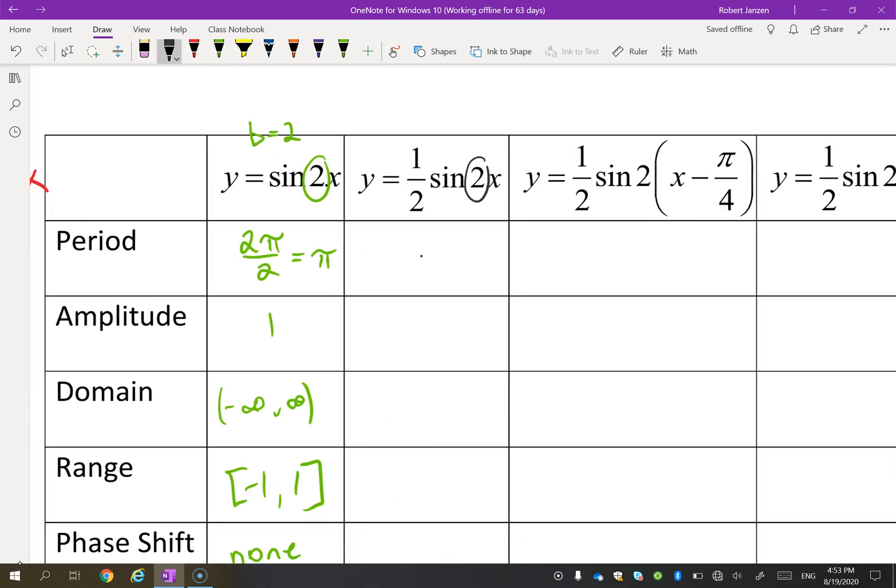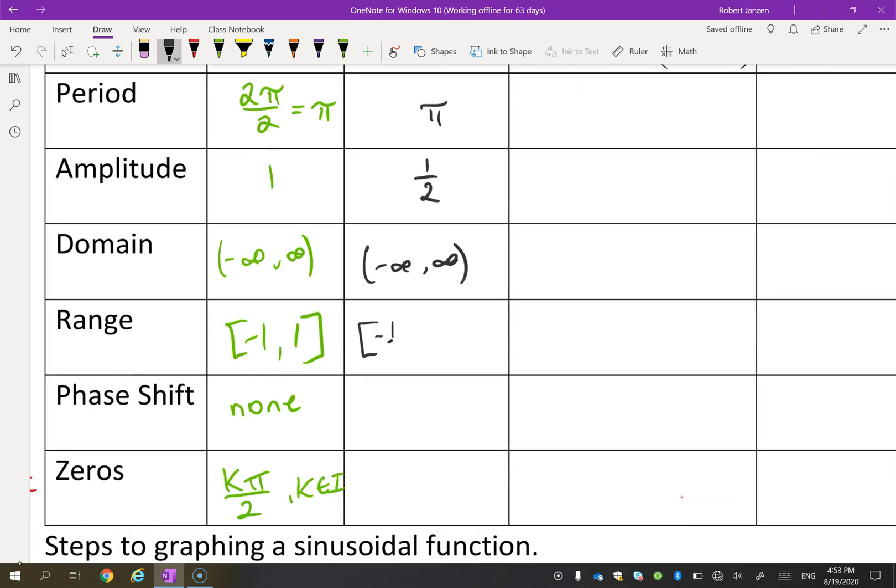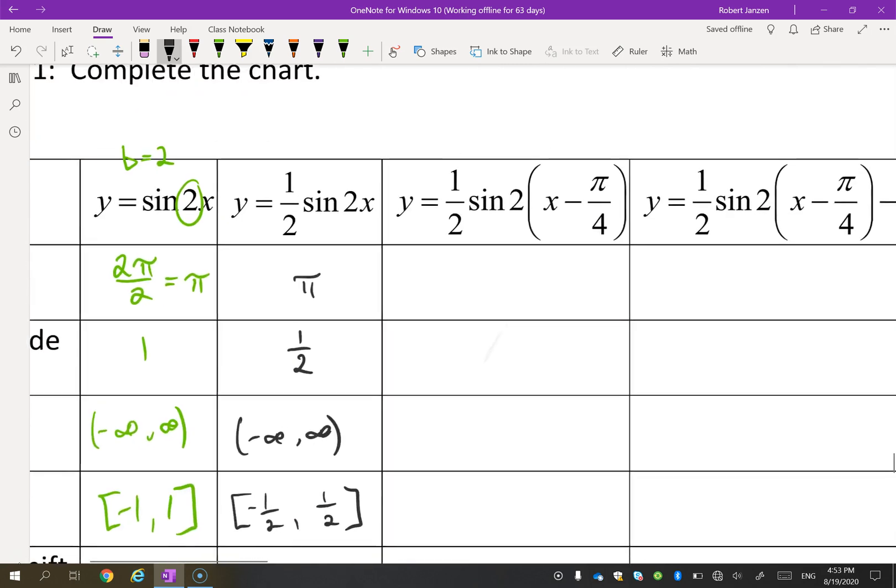All right, let's try the next one. So we're still having a period of π, but now we're going to affect the amplitude. The amplitude is now only going to be a half. That is an a value. The a value affects the vertical, and in this case we multiply the vertical by half. The domain won't change. The range will change because now it's only from negative a half to a half. The phase shift, we still haven't moved left or right, and the zeros will be the same as they were when we shrunk the period.